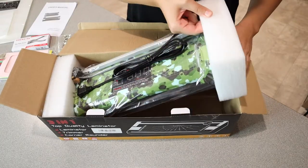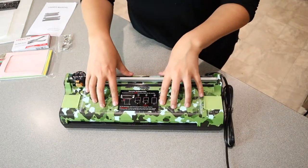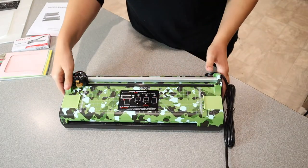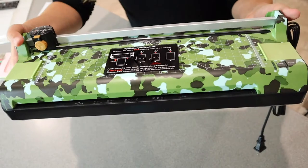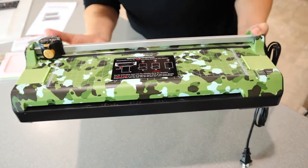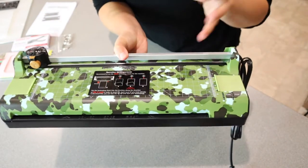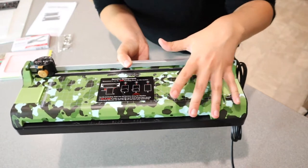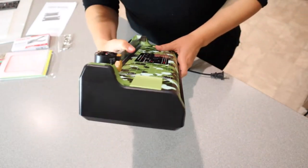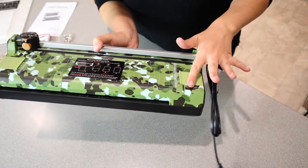And then we have the actual laminator itself. I picked this camouflage design because I just thought it was really fun. A lot of my things are just black, like all the different tools that I have in the little schooling section, so I'll easily be able to tell what this one is and be able to pull it out.